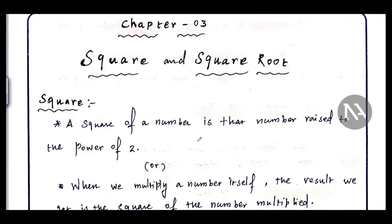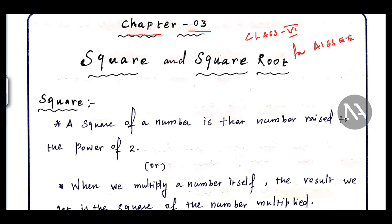Hi guys. This is Chapter 3 of Class 6 Mathematics for All India Science Code Entrance Exam. Chapter 3 is Square and Square Root.